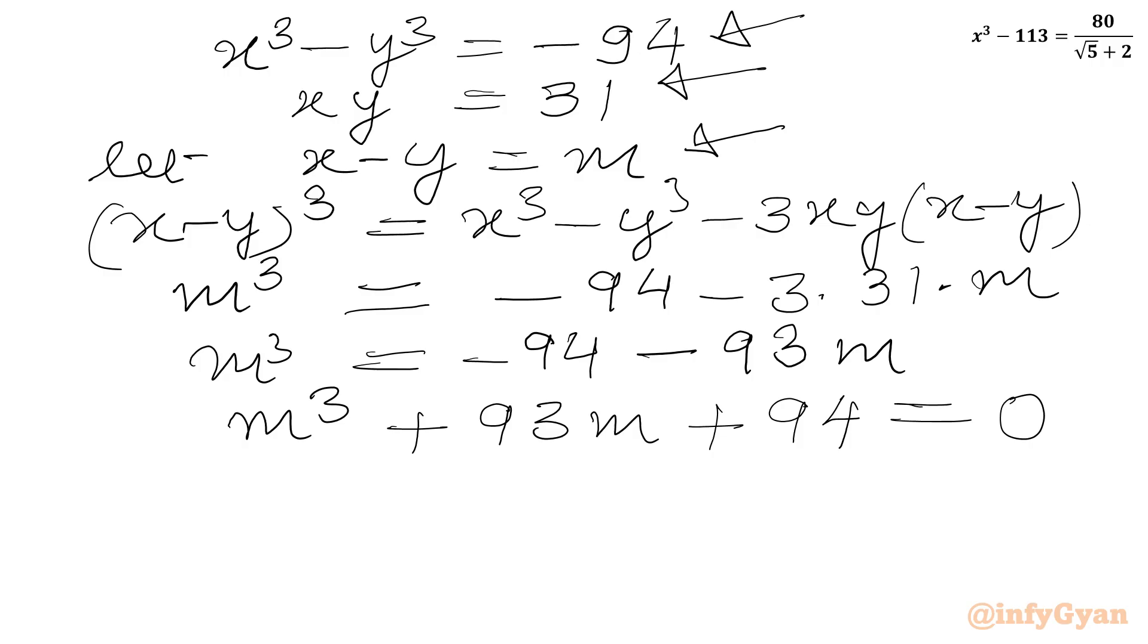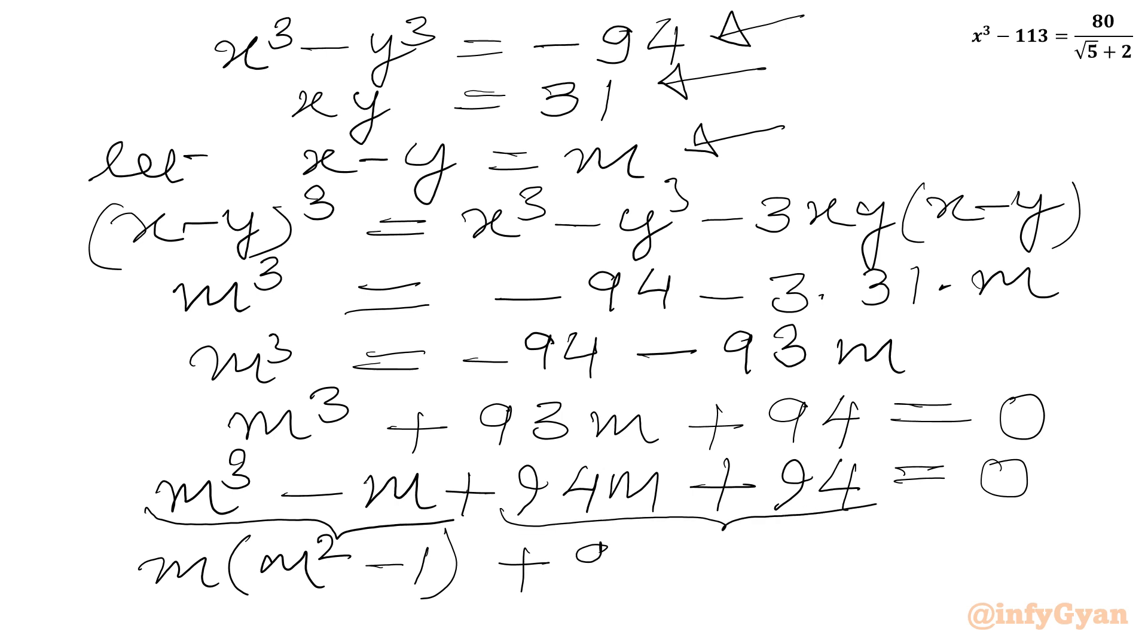Now equation is cubic. We can use method of factorization. So I can write our equation as m cube plus 93m. I will write minus m plus 94m. 94 minus 1 is plus 93 plus 94 equal to 0. Now from first two terms we can consider m common. So m square minus 1. From last two terms we can take 94 common. So in the bracket we will get m plus 1 equal to 0.